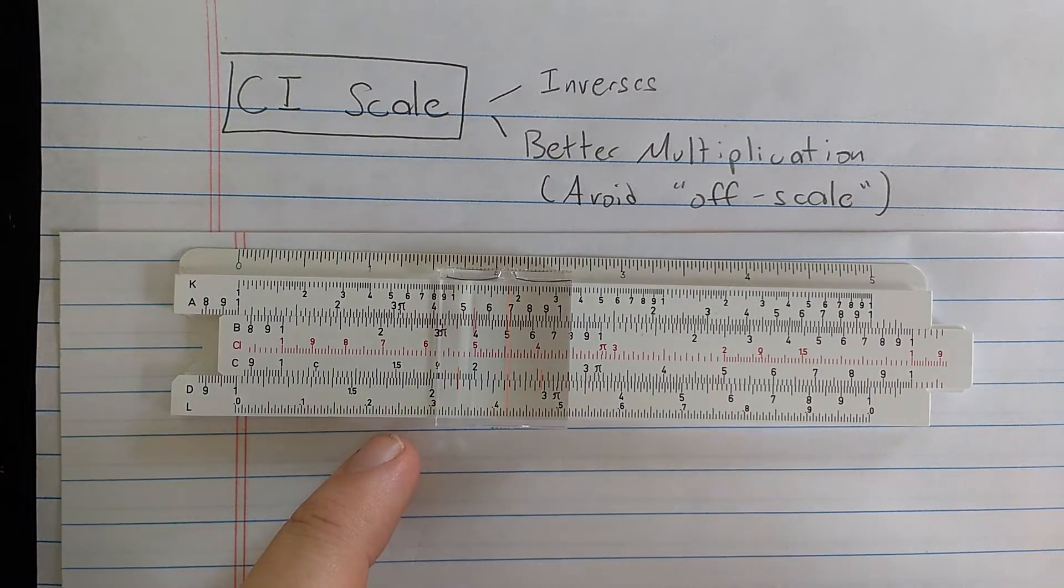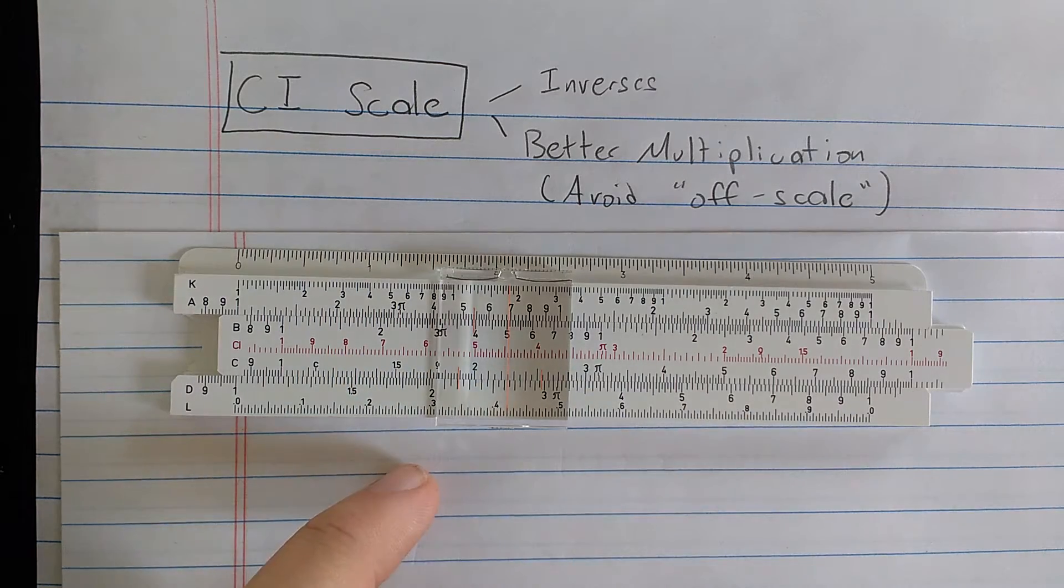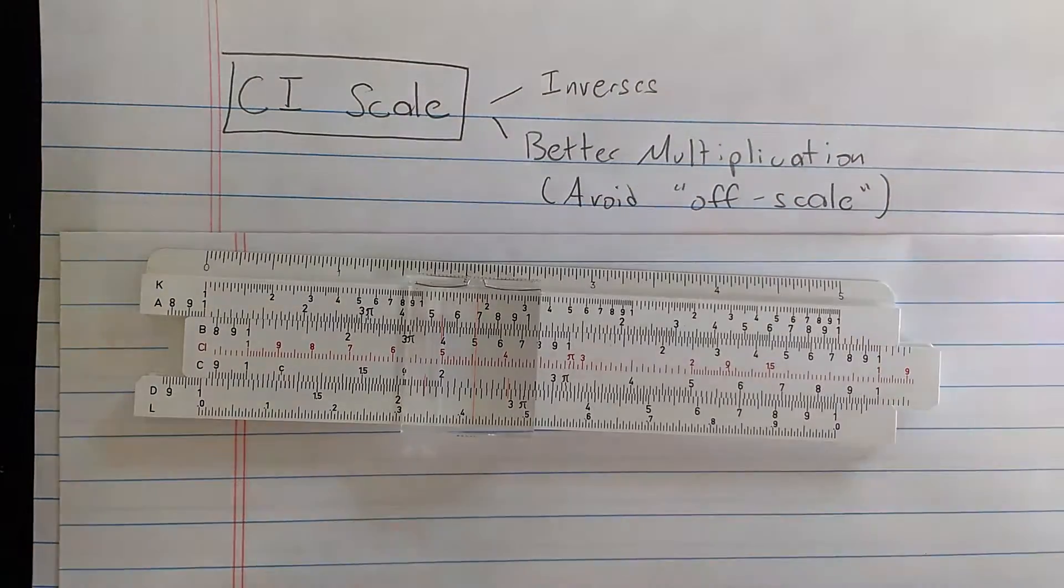This is not true on all slide rules, but in many slide rules if you see a red scale the numbers are decreasing as you go to the right as you see on the CI scale.